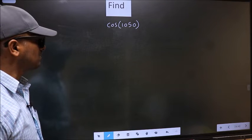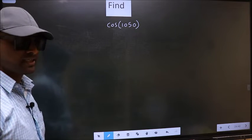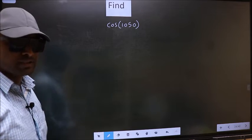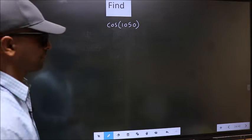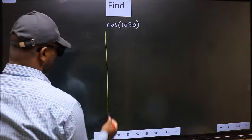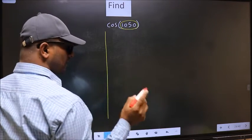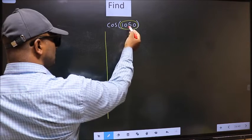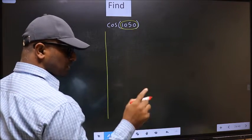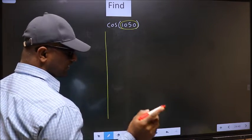Find cos(1050°). To find this, we should follow this method. Here we have 1050°. Now you should check, 1050° lies between which two multiples of 180°?